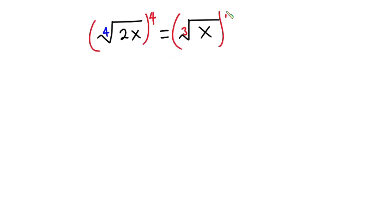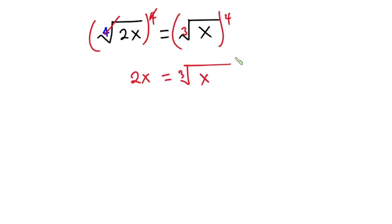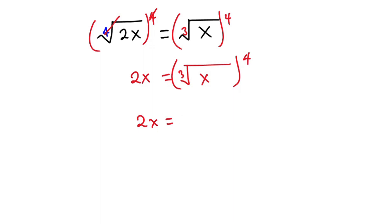Raising each side to the fourth power, this 4 will cancel the fourth root, so we have 2x on the left. This is equal to the cube root of x, all raised to the power of 4. Let's copy this down: we have 2x is equal to the cube root of x to the power 4.